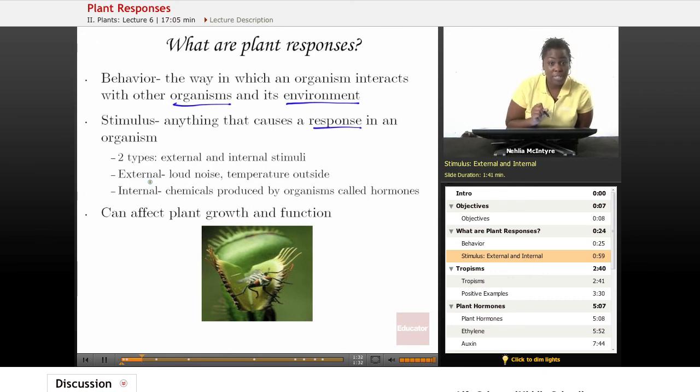For all organisms, there are two different types of stimuli. Stimuli is just the plural word for stimulus. There's external stimuli, and those are things that stimulate the organism outside of itself. An external stimuli example would be like a loud noise coming from a car or a truck, or the temperature outside, whether it's getting really cold or really hot. Those would be external stimuli because they affect the organism, but they come from an outside source.